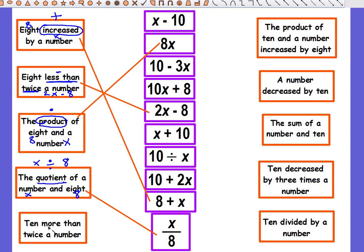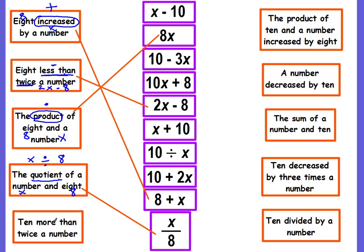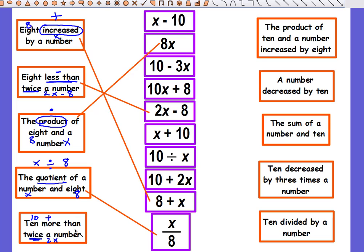Then 10 more than twice a number. 10 more means that we're going to add. More than means to add. Twice a number - twice means you're going to multiply by two. We don't know the number, so we're going to use our x. So we want to look for the 10 plus 2x. The expression here, it is right here: 10 plus 2x.